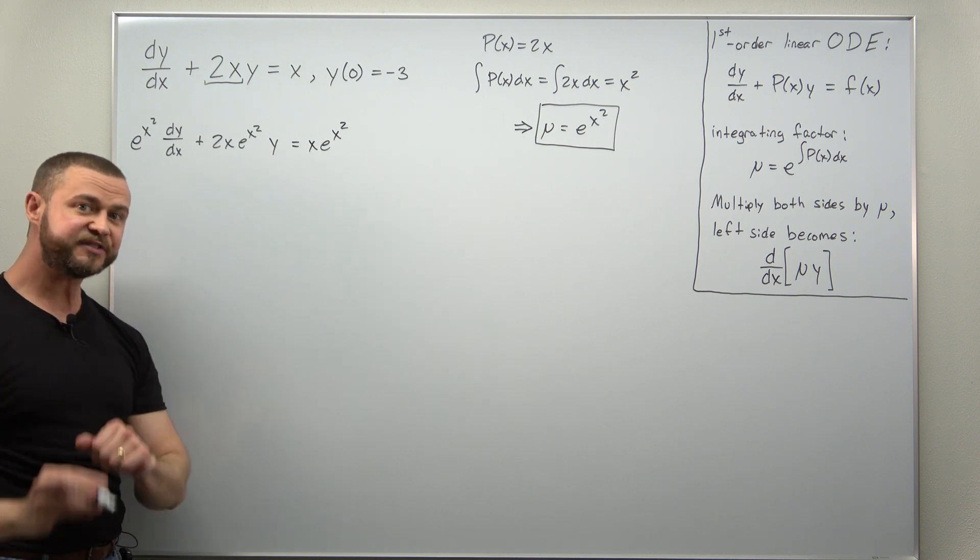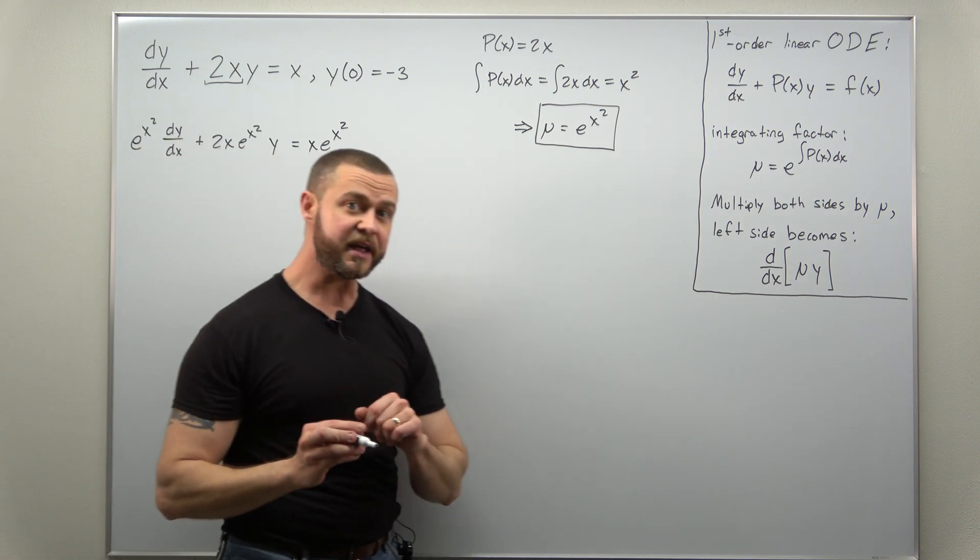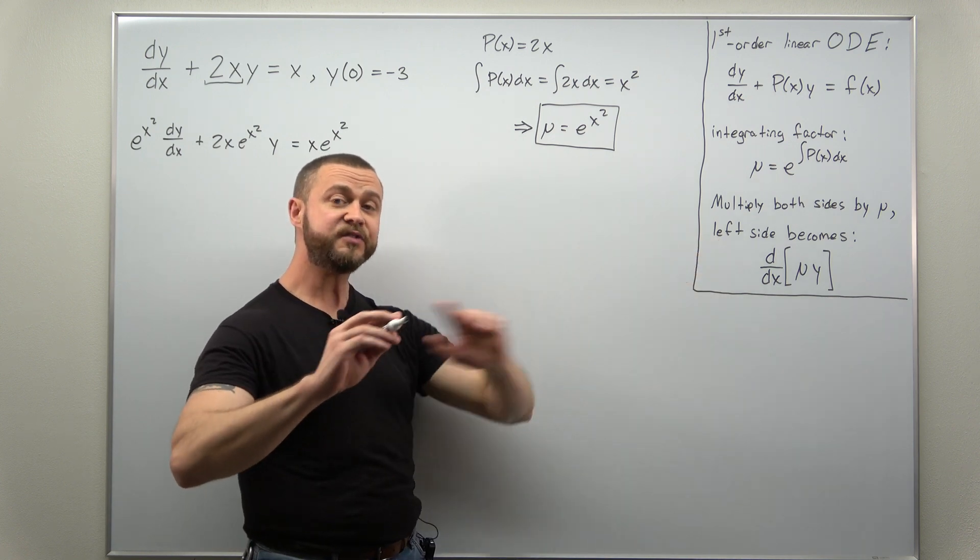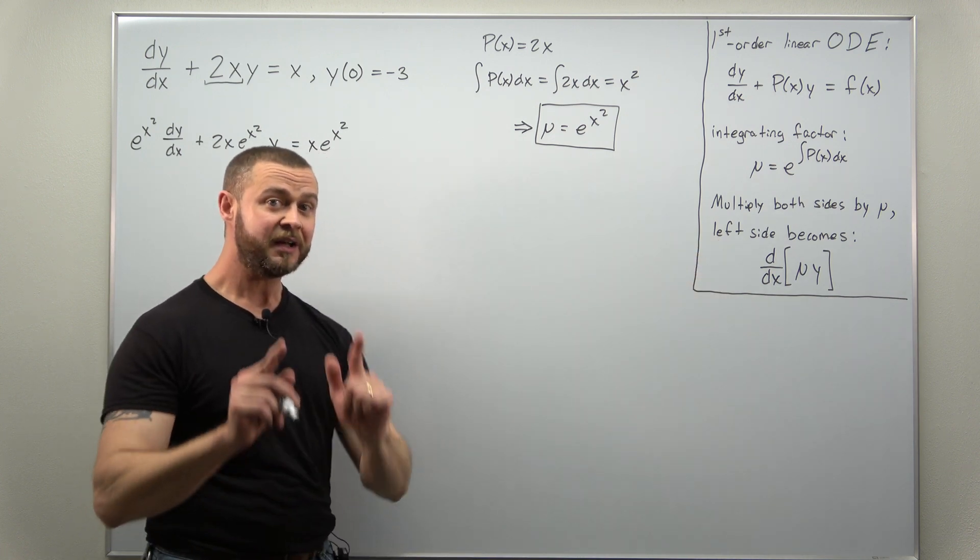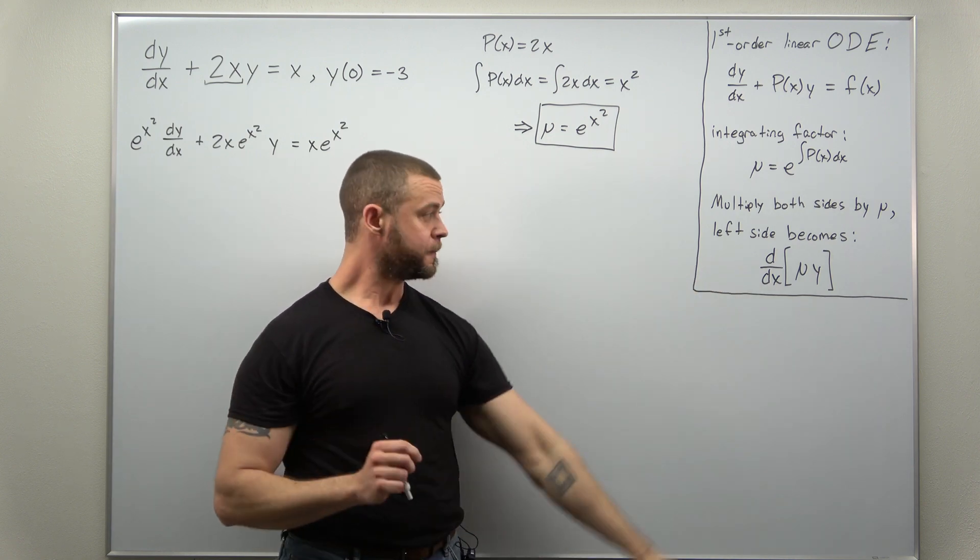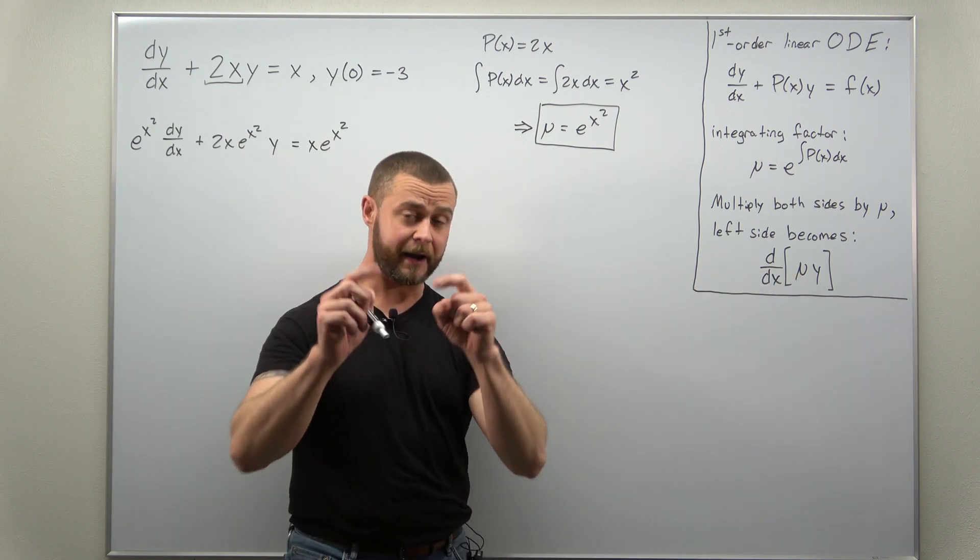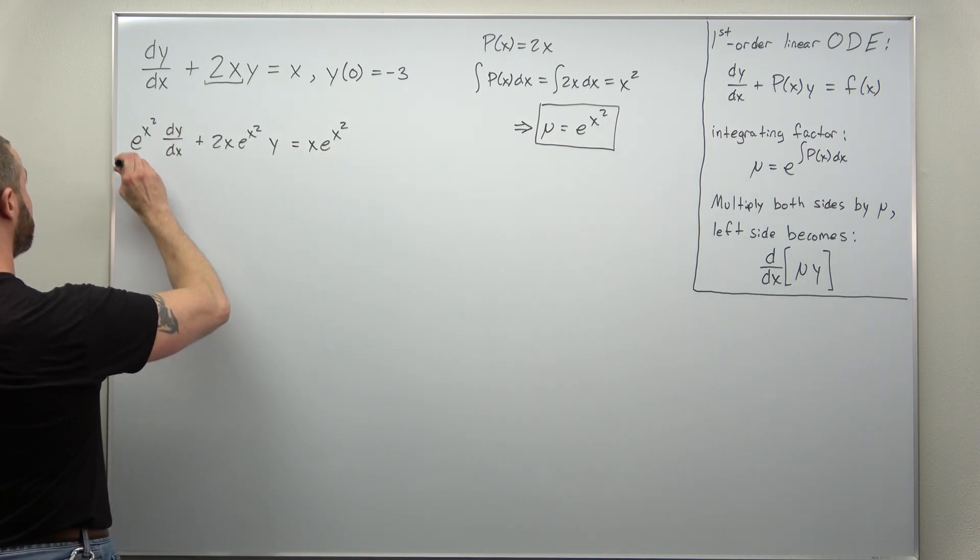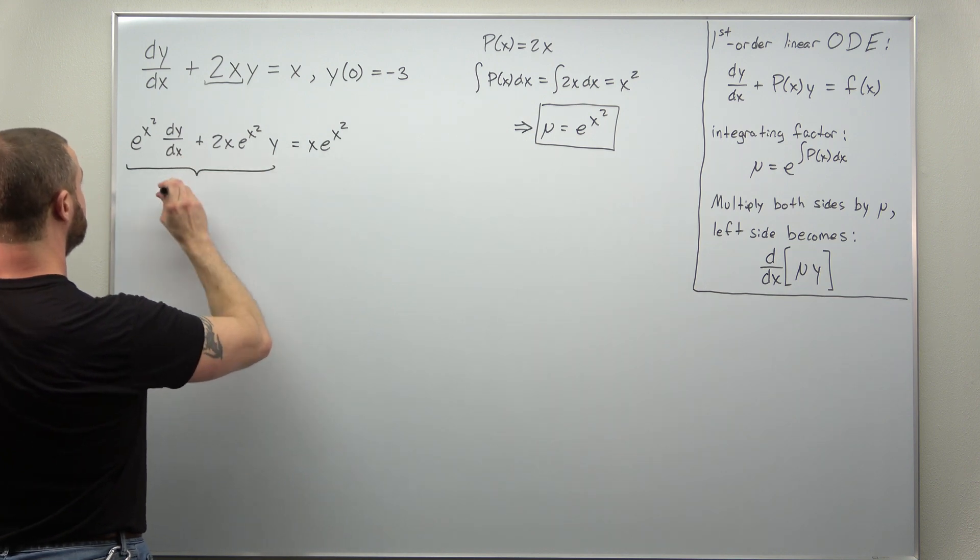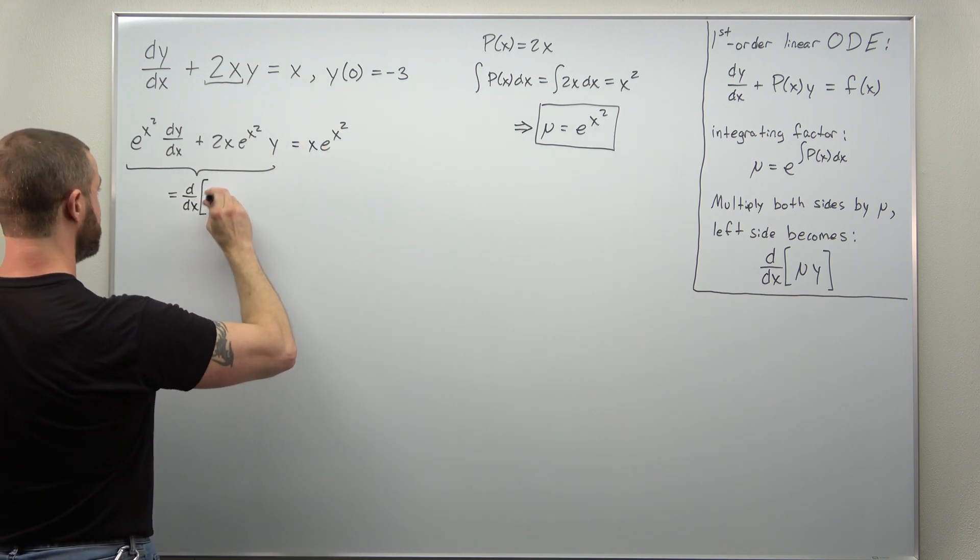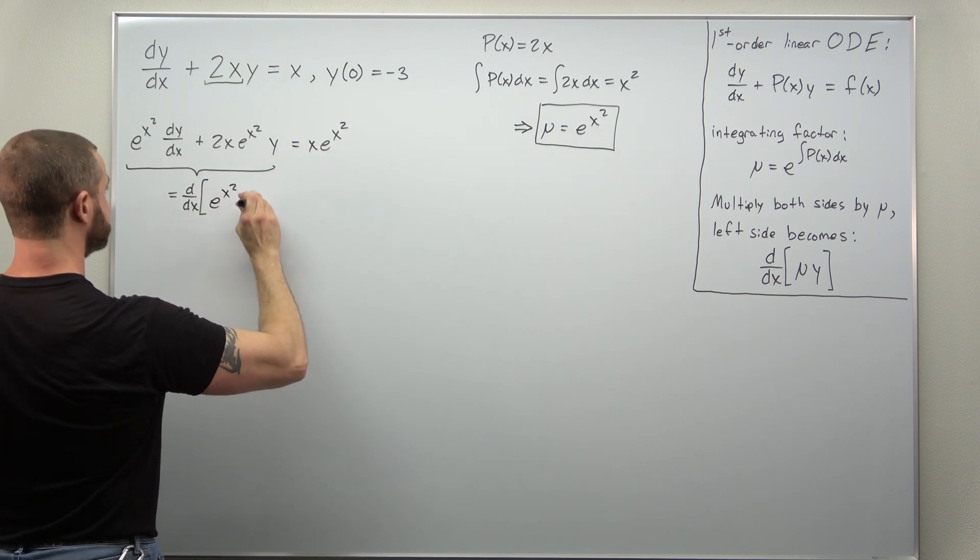And now we're ready for the key step. The whole reason we use an integrating factor is the left side always combines or collapses to the derivative with respect to x of μ, the integrating factor, times y. And that always happens. So this left side becomes the derivative with respect to x of the integrating factor μ, e to the x squared, times y.